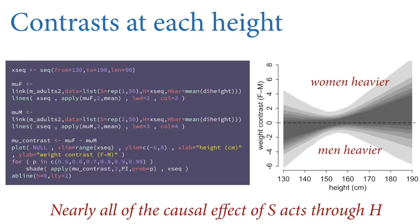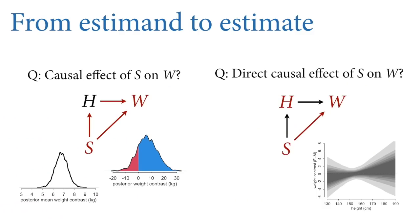What does this tell us? Nearly all of the causal effect of birth sex in this data set acts through height. There's a very substantial and reliable adult weight difference between men and women in this population, and men are reliably taller — though there's lots of overlap. After stratifying by height, we find very little difference left. Just because the distribution overlaps zero, there's no scientifically justifiable reason to simply ignore what's going on. This is our estimate of the direct causal effect of sex on weight — modest, unreliable, but there's a little bit of something going on there, probably.